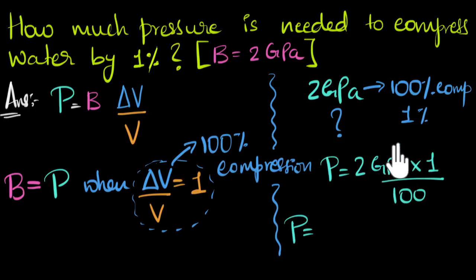Let's go ahead and write that. It's two times 10 to the power of nine. And we cut two zeros. So you end up with two times 10 to the power of seven pascals. And that's our answer. That is the amount of pressure needed to compress water.